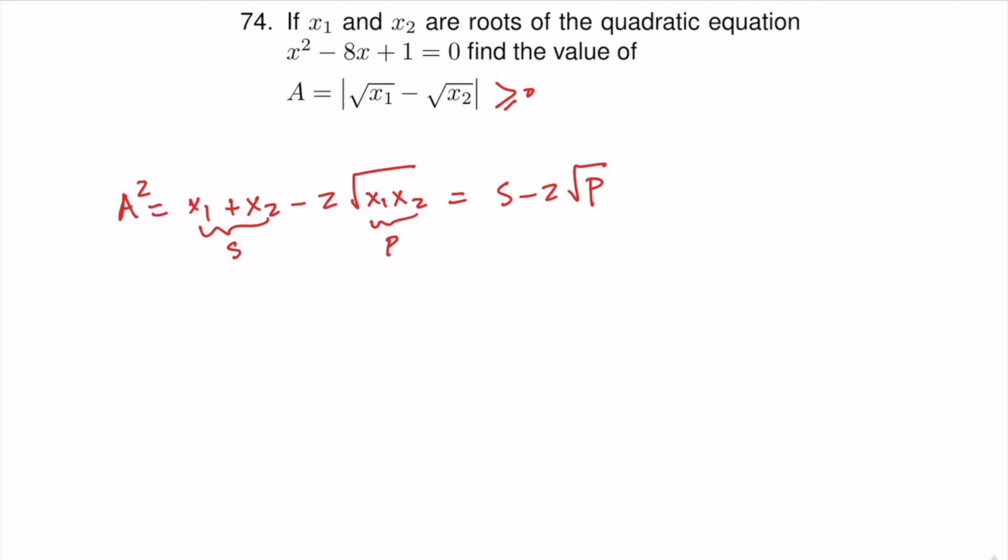And from previous problems, we know that for this quadratic equation, S will be 8 and P will be 1. So A squared is 8 minus 2, which is 6.